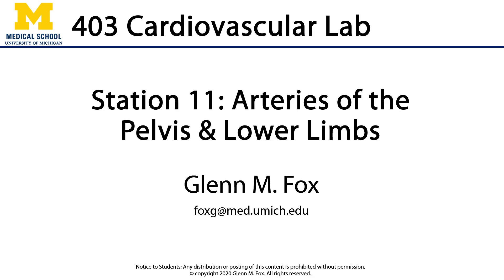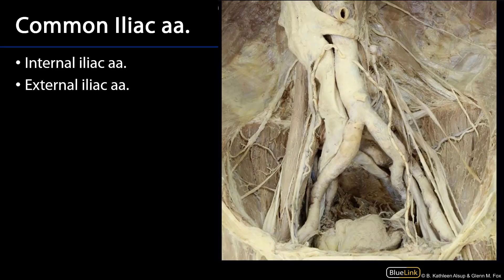Let's talk about the arteries of the pelvis and lower limbs. As you may recall, the abdominal aorta splits into the common iliac arteries at about the level of L4. Those common iliac arteries are going to ride the ridge of the division between the abdominal cavity and the pelvic cavity before dividing into the external iliac and internal iliac arteries.